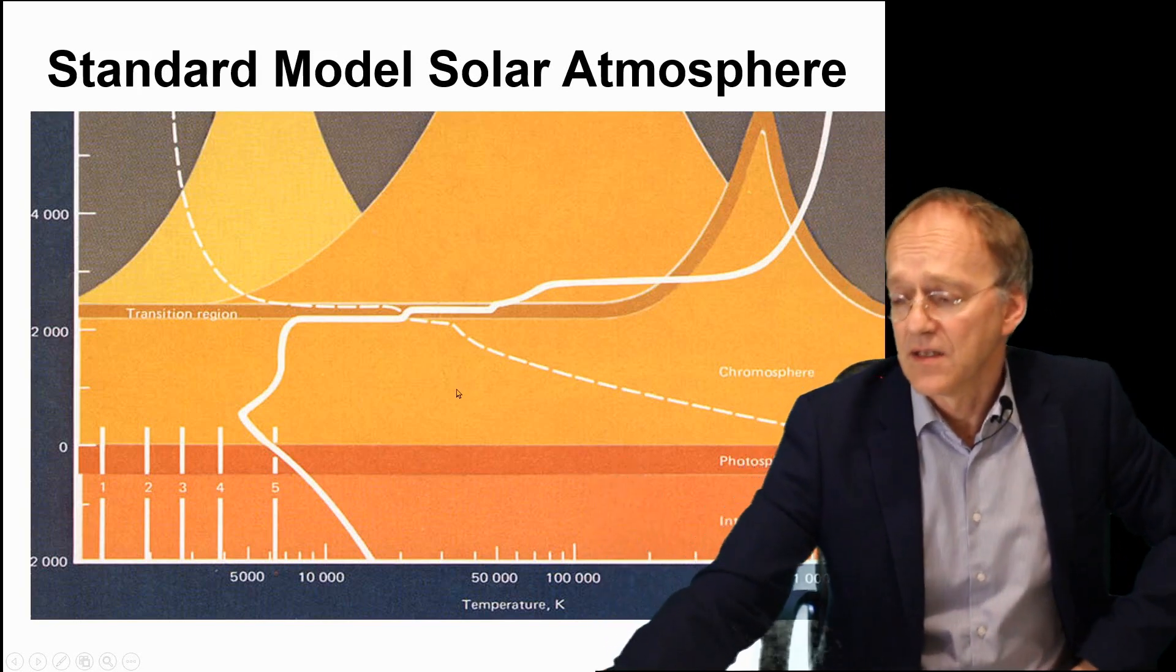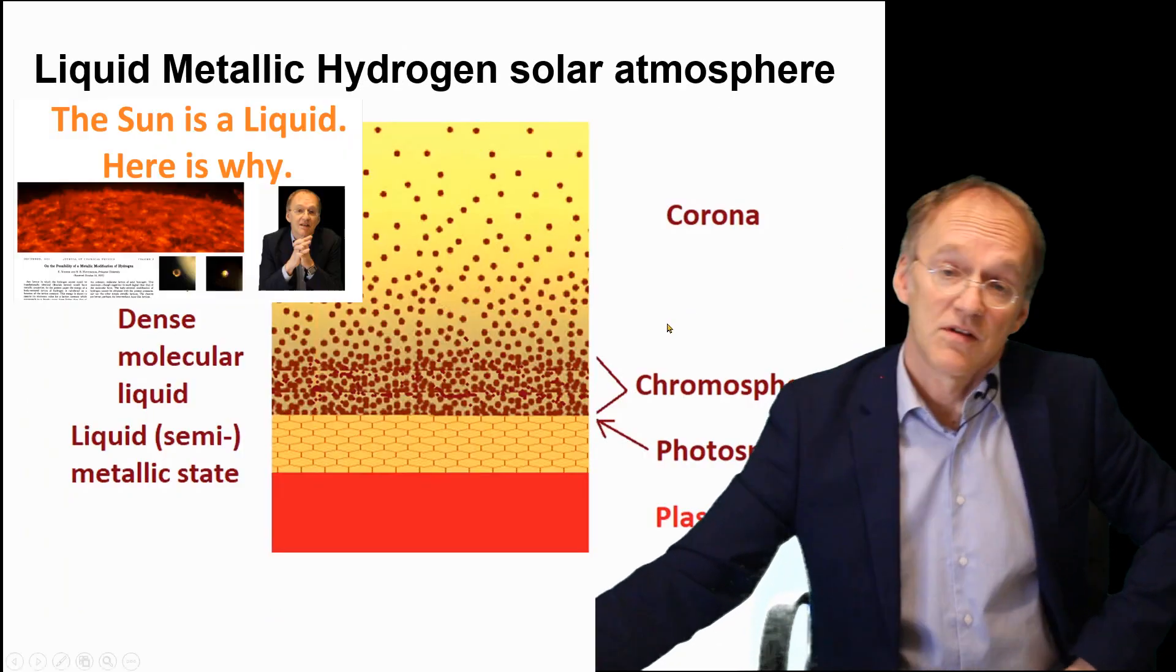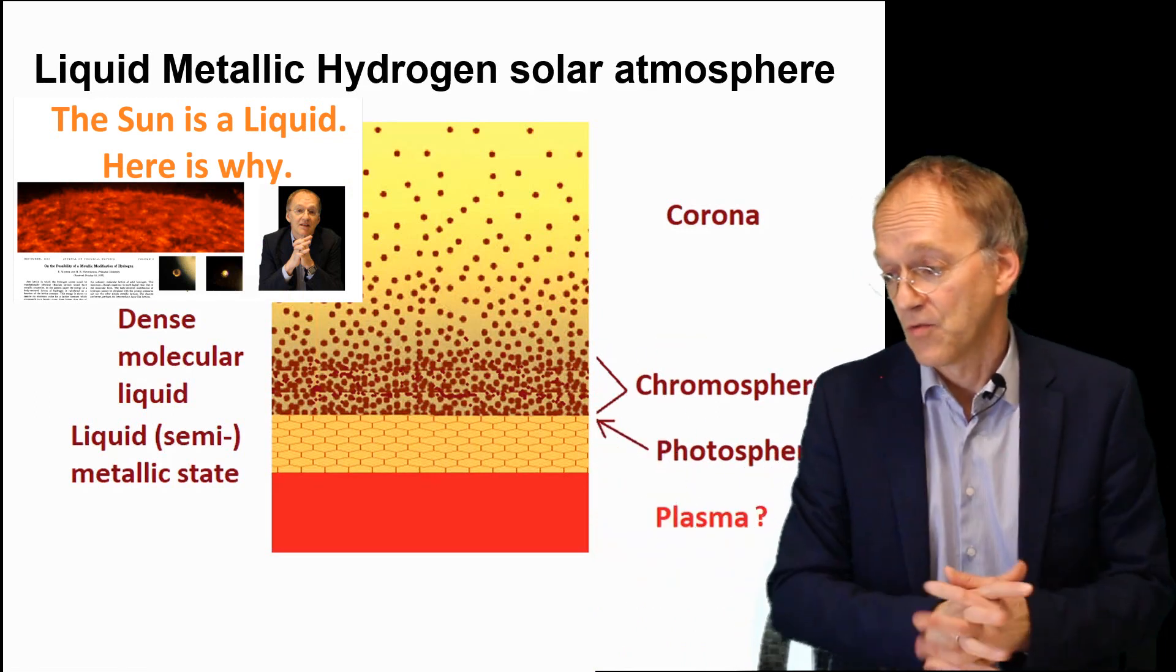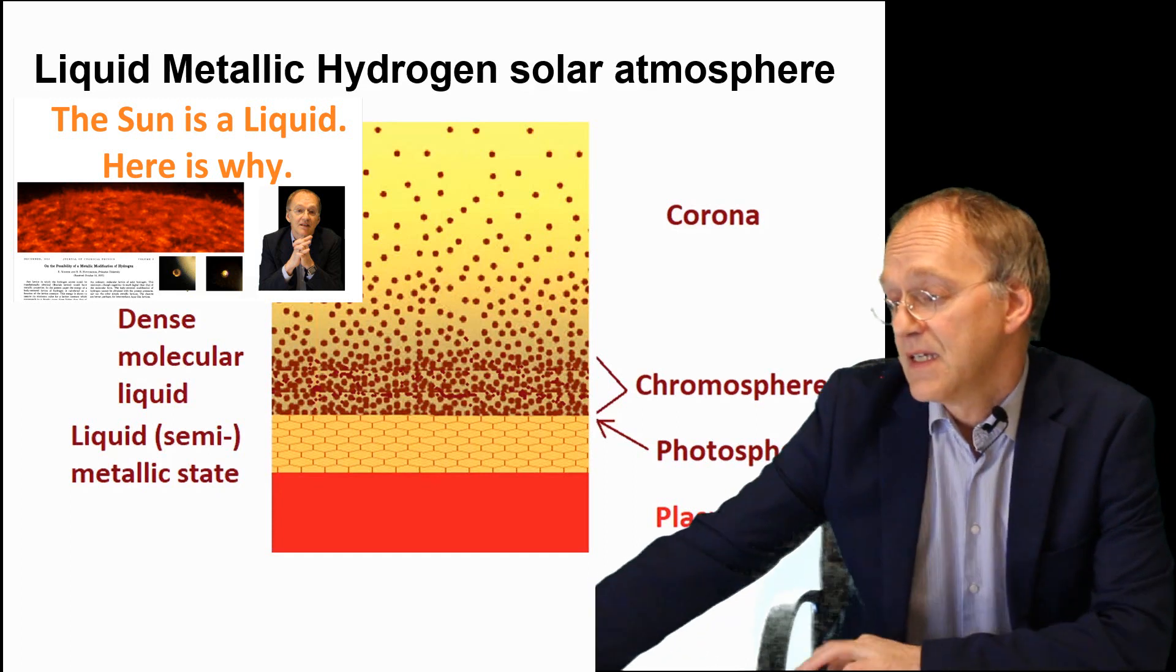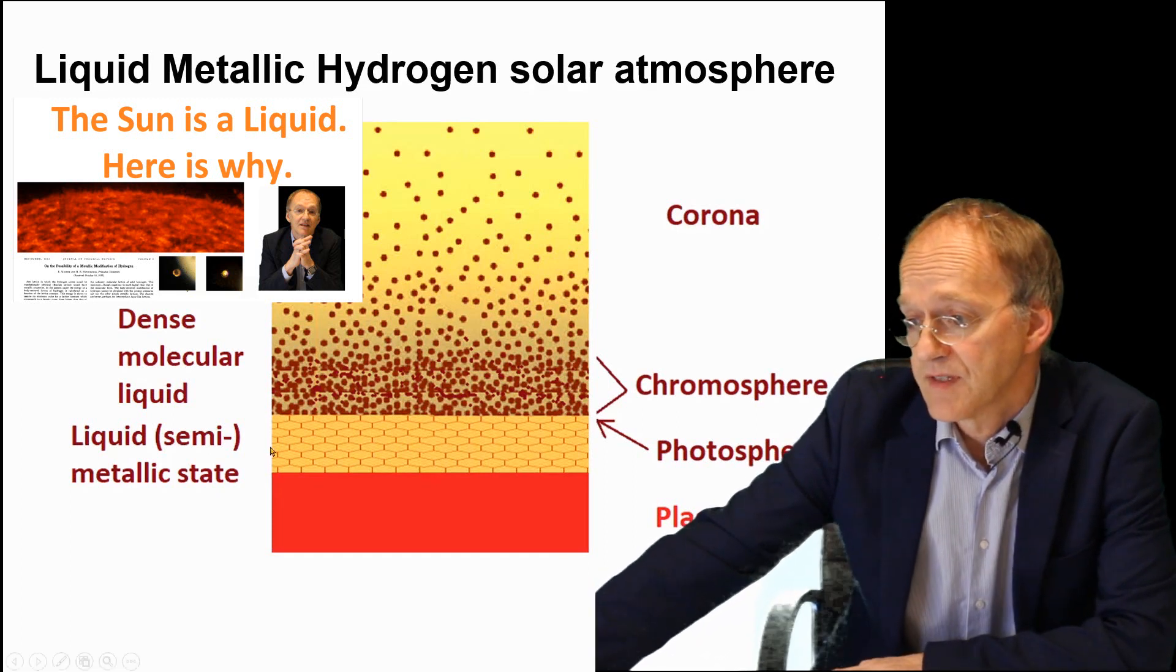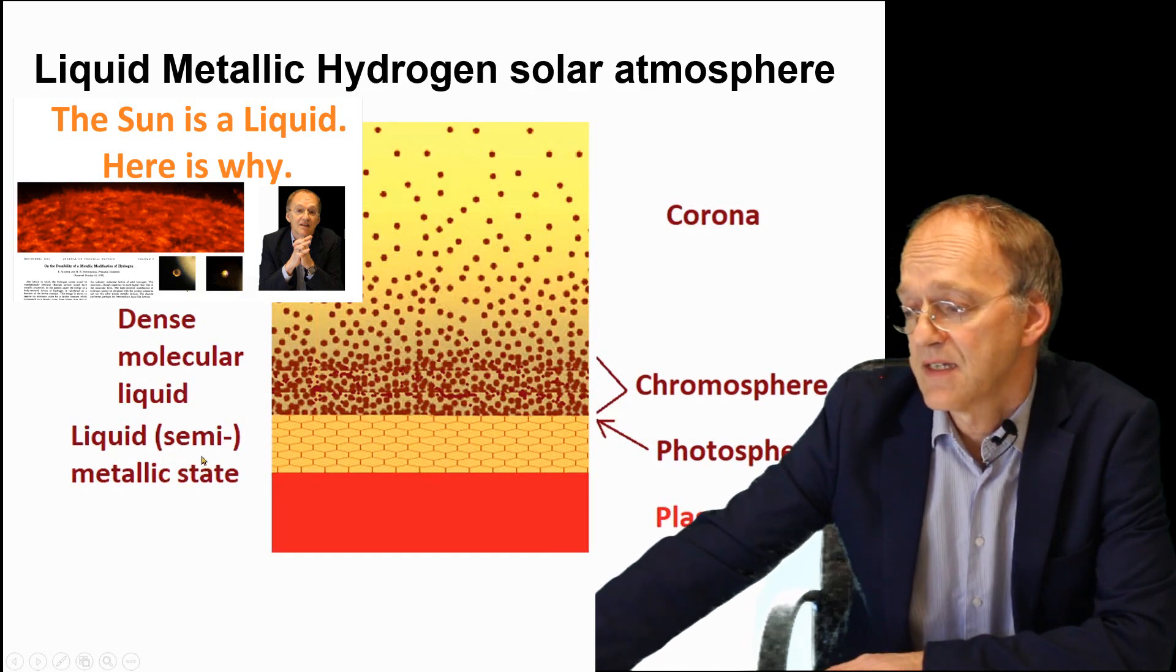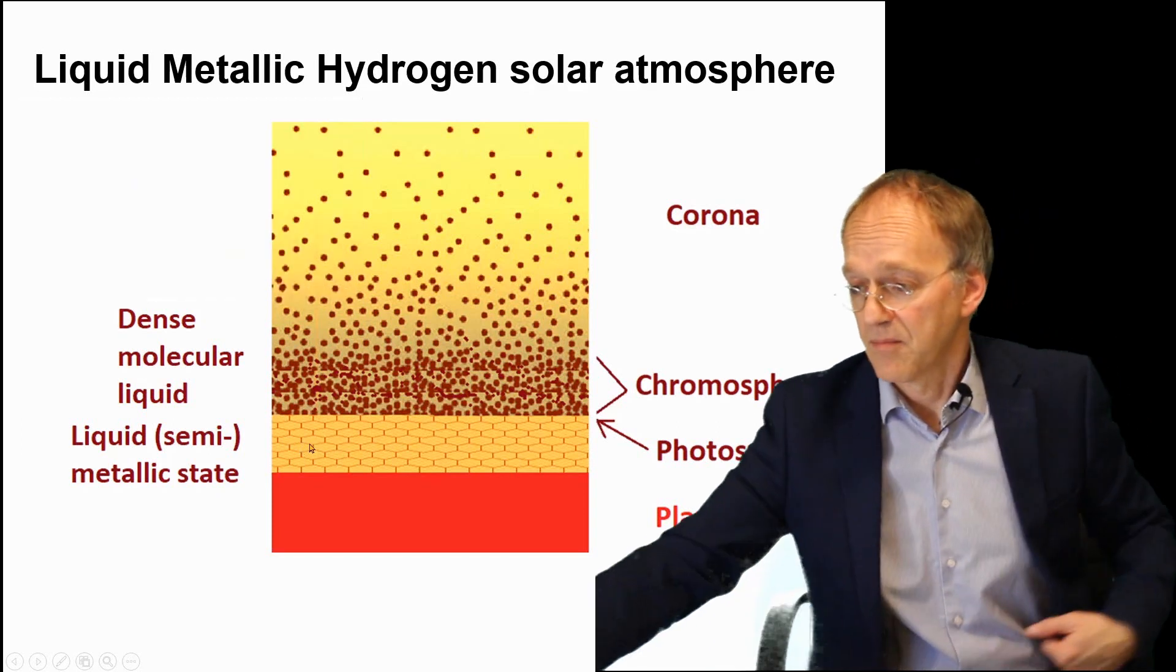Now the alternative is the liquid metallic hydrogen model developed by Pierre-Marie Robitaille, an eminent physicist who held the world record for nuclear magnetic resonance imaging. He developed this model of the atmosphere consisting of liquid metallic hydrogen or a semi-metallic state, which makes much sense because it can easily produce a black body spectrum.